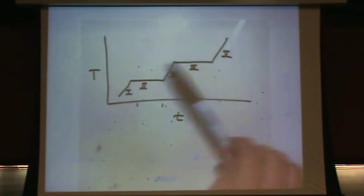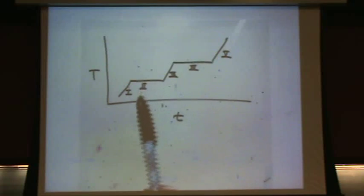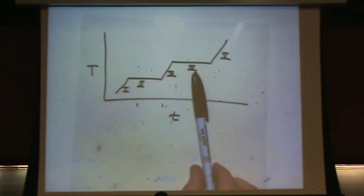So all the flat lines represent phase change. Okay? So two is melting. Four is boiling.